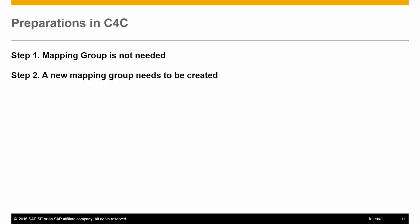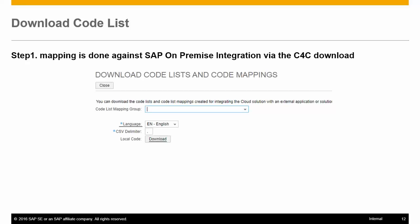Before downloading the codelist and codelist mapping from the cloud system, a user has to check for their scenario whether they need a new mapping group or can reuse the base group provided by SAP. In step one, where a new mapping group is not needed, you will do your mapping against the SAP on-premise integration via the C4C download. The UI in C4C for download reads all the codes which are scoped in the system and downloads them into a local file.